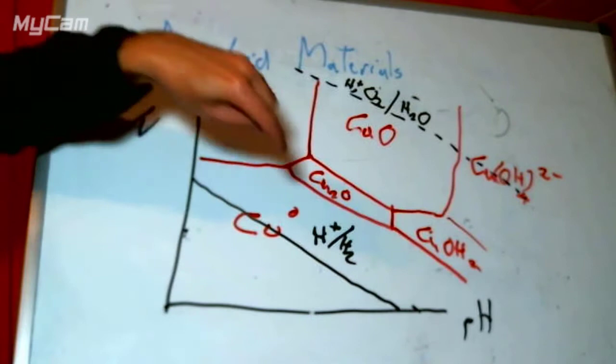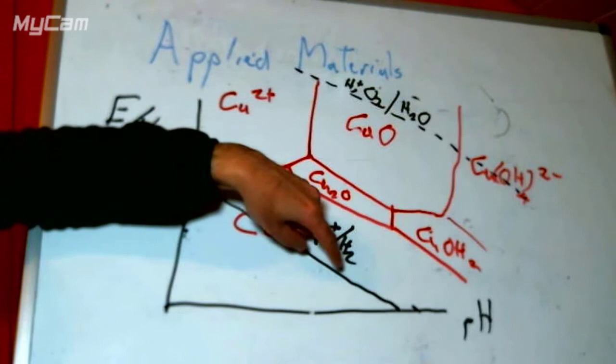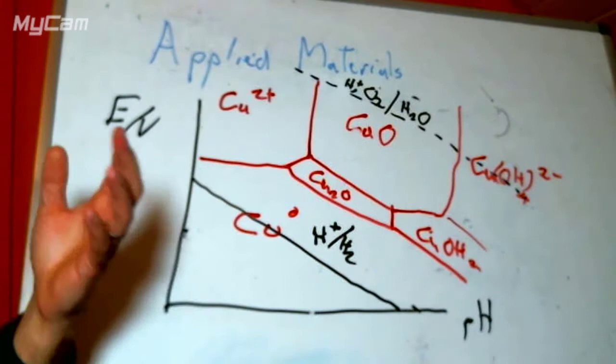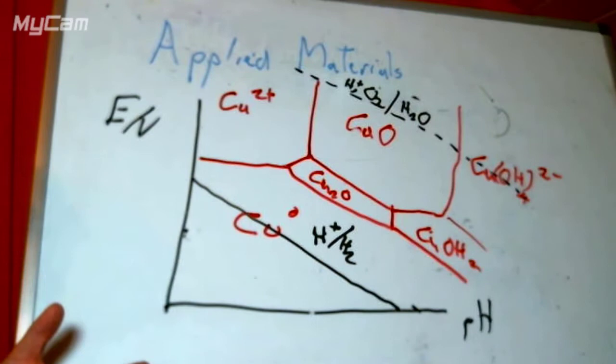So copper, like aluminium, is unstable at both the acid and base ends. But more usefully from a kinetic point of view, copper is kinetically stabilized within the region where the copper oxide can be formed. This is called a Pourbaix diagram — it's a type of phase diagram. These are the phases we would expect if we waited forever, but we're going to use it to predict what will happen to our surface.